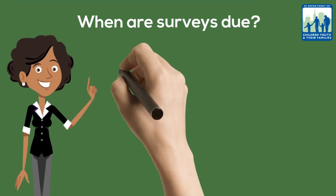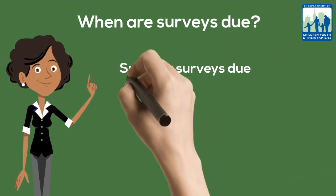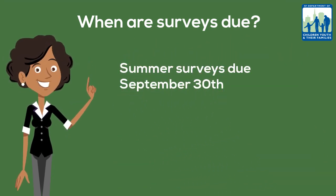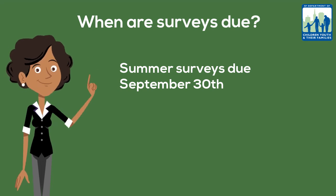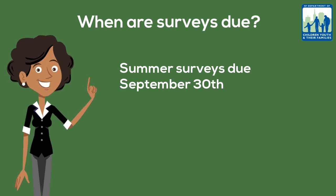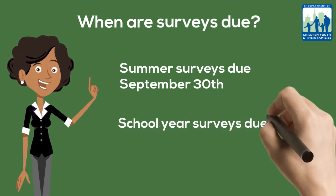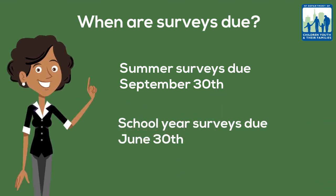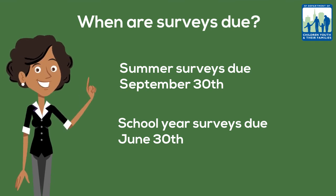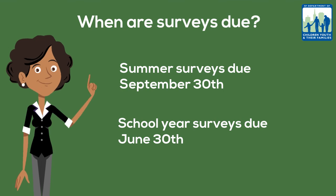Surveys that are administered during the summer are due September 30th. Summer generally falls between the end of May to mid-August, and DCYF will start accepting summer surveys September 1st. Surveys that are administered during the school year are due June 30th. The school year generally falls mid-August to end of May, and DCYF will start accepting school year surveys June 1st.